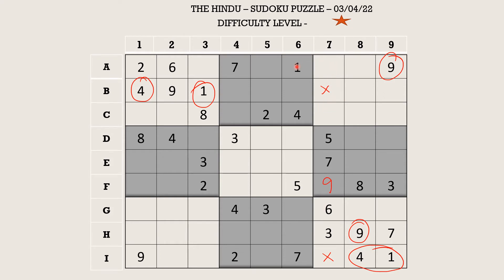You have a 1 and 4 here. So accordingly, A7 takes 4 and C7 takes 1. Now in column 7 there are only two empty cells and the missing numbers are 2 and 8. There is a 2 here in row I which blocks this cell. So 2 goes in B7 and the only missing number 8 goes in I7.